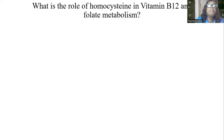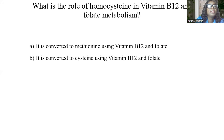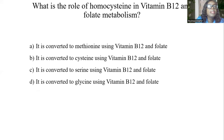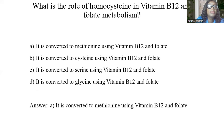What is the role of homocysteine in vitamin B12 and folate metabolism? A, it is converted to methionine using vitamin B12 and folate. B, it is converted to cysteine using vitamin B12 and folate. C, it is converted to serine using vitamin B12 and folate. D, it is converted to glycine using vitamin B12 and folate. And the answer is A, it is converted to methionine using vitamin B12 and folate as cofactors.